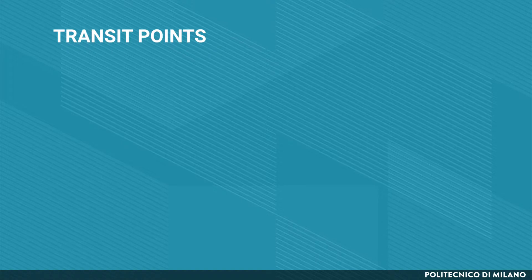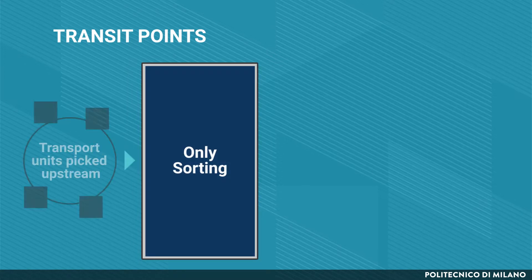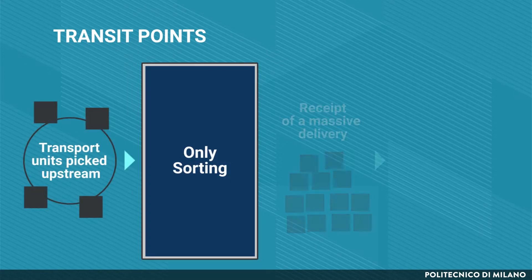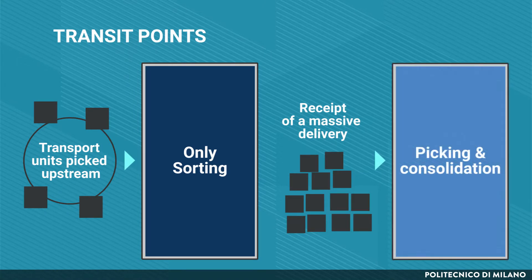As for transit points, they adopt at least two different operative models. First, only sorting of transport units which have been completely picked upstream. Second, receipt of a massive delivery — that is aggregation of different customer orders — and the picking and consolidation of transport units for each customer.